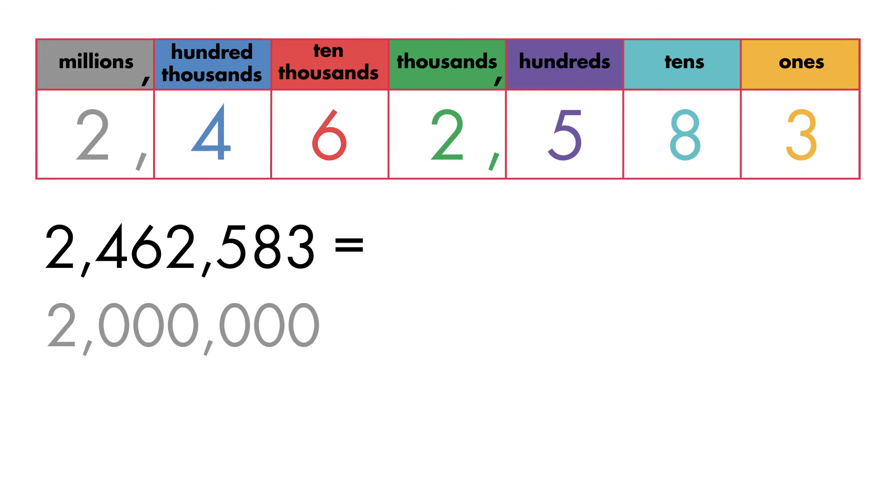The four is in the hundred thousands place and has five digits that follow it. So, we will write a four with five zeros after it.